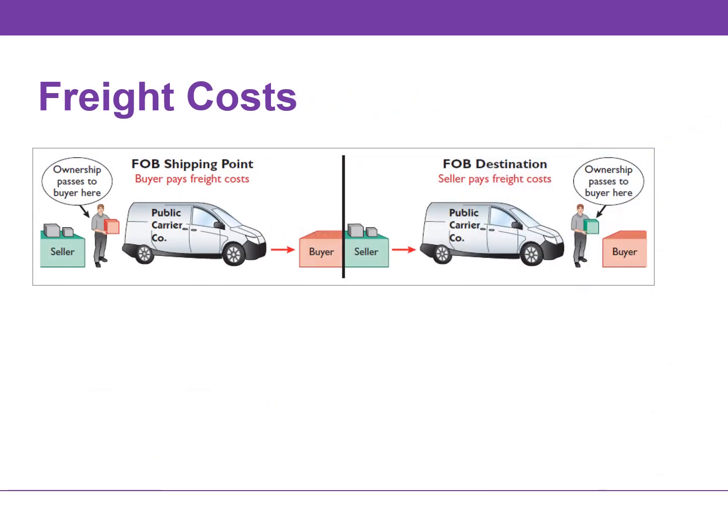The sales agreement indicates who — the seller or the buyer — is responsible for paying for the freight. A third party, such as FedEx or UPS, delivers the goods from the seller to the buyer's place of business. Freight terms are expressed as either FOB shipping point or FOB destination. The letters FOB mean free on board.